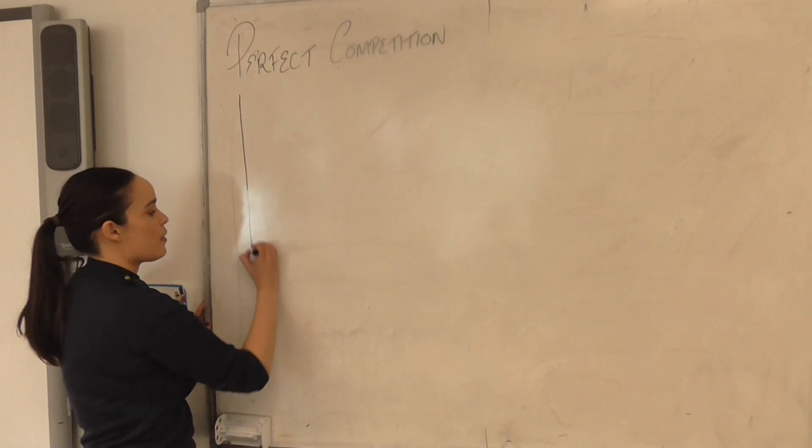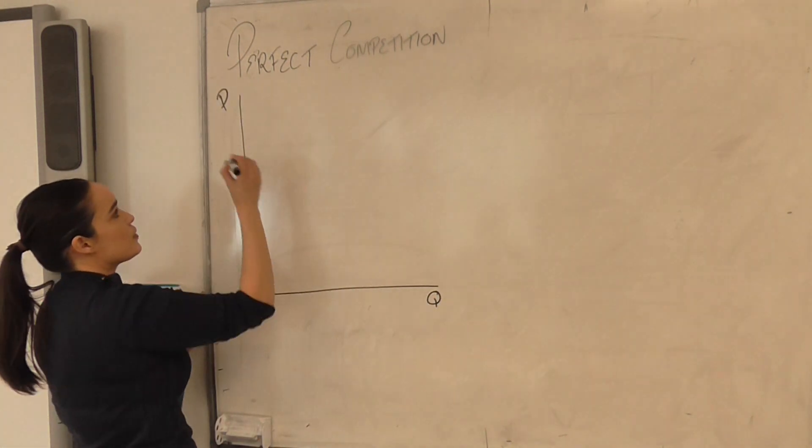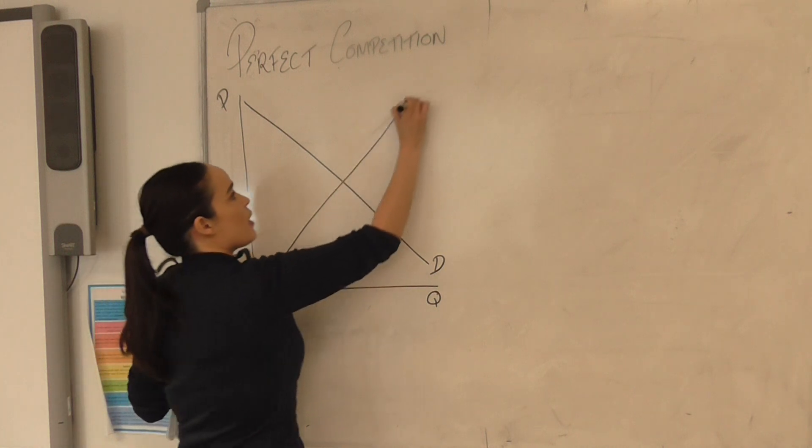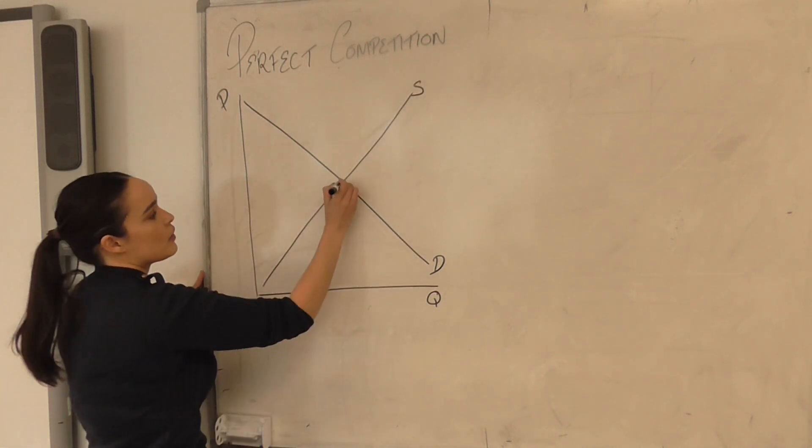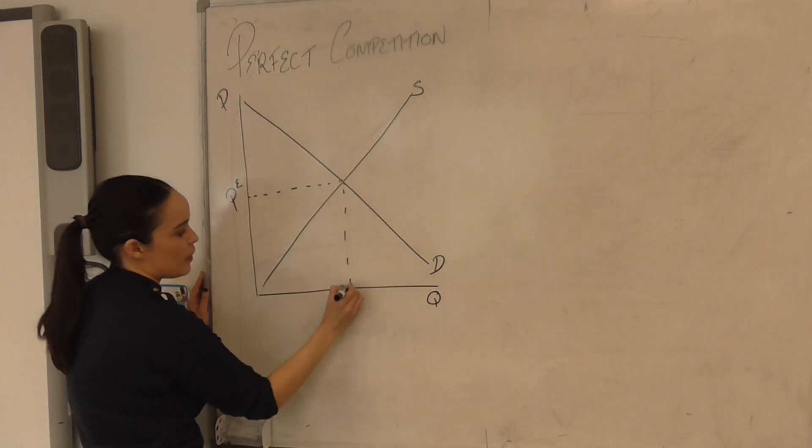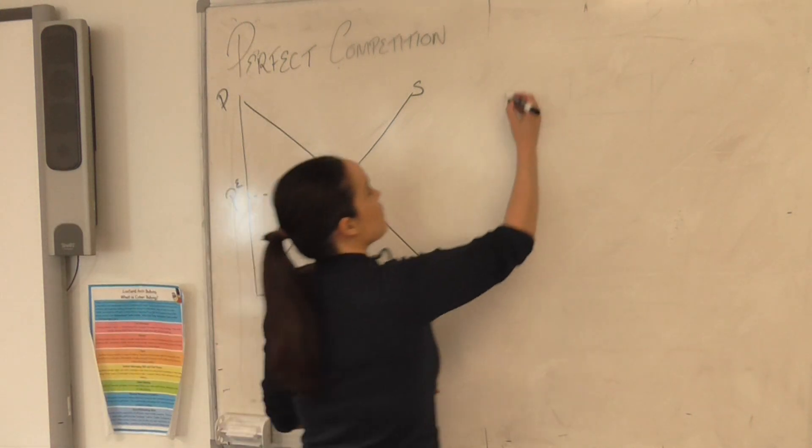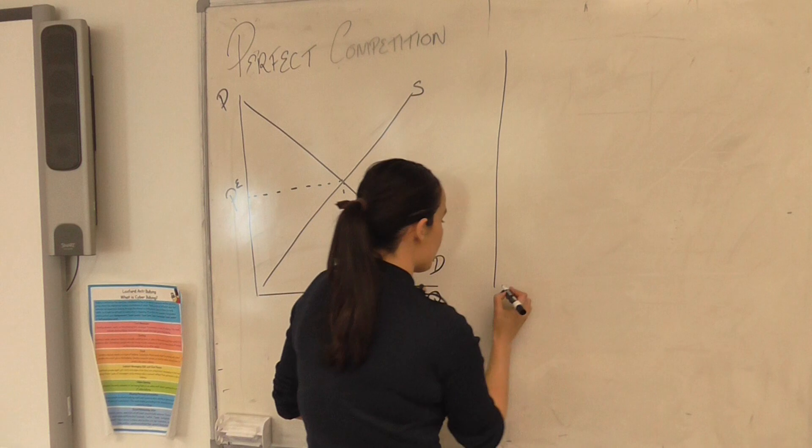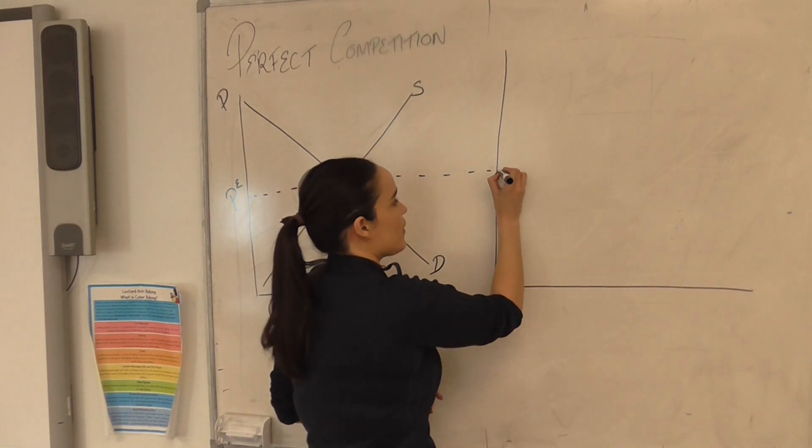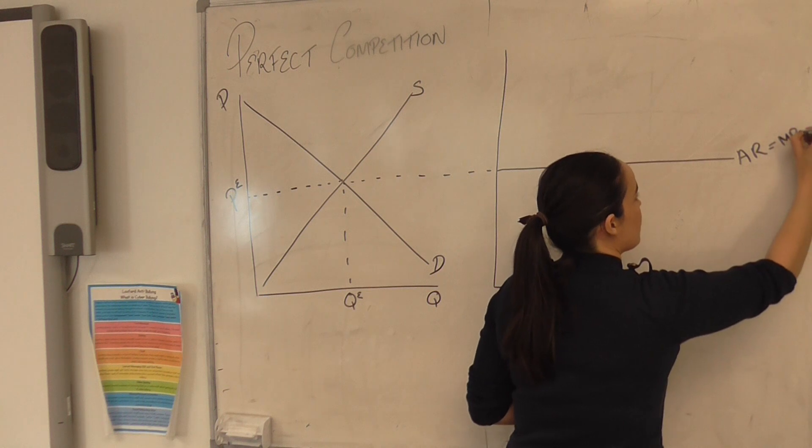So during the last video, please feel free to go back and have a look at those videos to remind yourself, we had a look at how demand is downward sloping in the industry and how the market price actually is the overall price that both consumers and producers end up paying. There's no price setting in the market and therefore as firms are price takers in the market, that's actually why they have a completely elastic AR being equal to their MR.